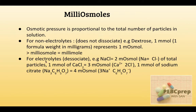The next one is for electrolytes. Electrolytes are those that dissociate when dissolved in water or any solution. For example, sodium chloride, calcium chloride, sodium citrate. Since they dissociate, we count the total number of particles present in the solute. For example, sodium chloride has one sodium and one chloride, so one plus one equals two milliosmoles.